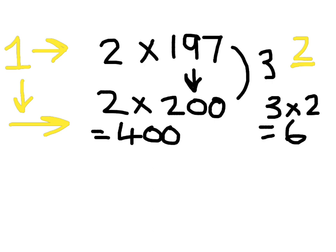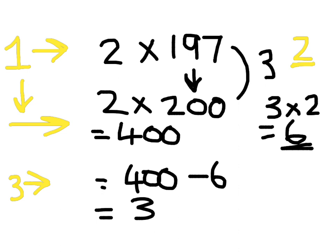Remember step 3 was to compensate, was to take back what we've given. Press pause and do that now. That's right, it's going to equal 400. Take away our 6 which we worked out over here, which will be 394.